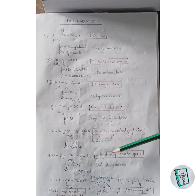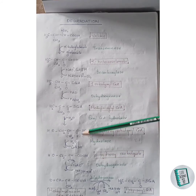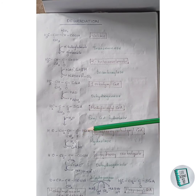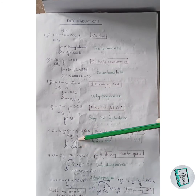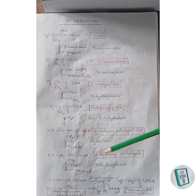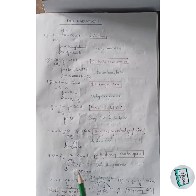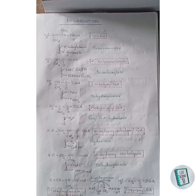Beta-hydroxy isobutyryl-CoA is then cleaved in the presence of hydrolase enzyme to form beta-hydroxy isobutyrate. In this step, the S-CoA is removed by addition of water: a hydrogen from water is removed with S-CoA as CoA-SH, and the remaining OH group attaches to this carbon. Beta-hydroxy isobutyrate then undergoes dehydrogenation to form methylmalonate semialdehyde. NAD+ acts as coenzyme, and two hydrogens — one from each position — are removed with NAD+ as NADH2.